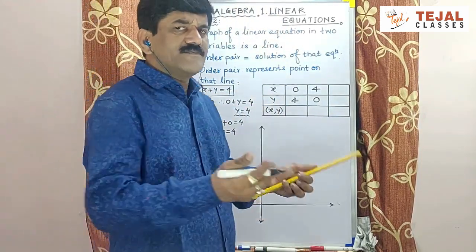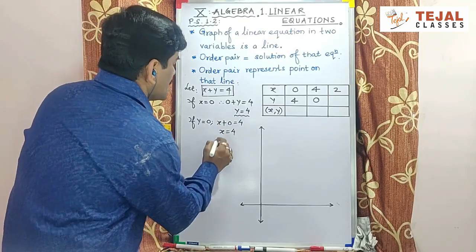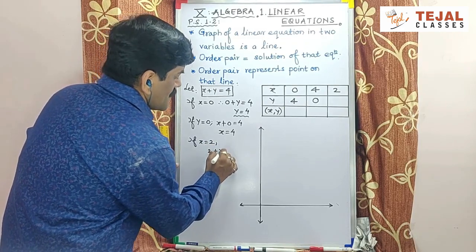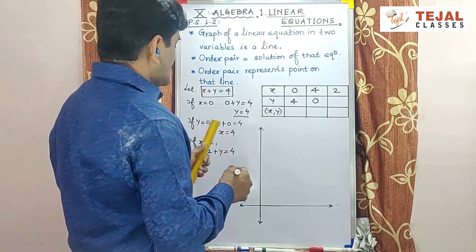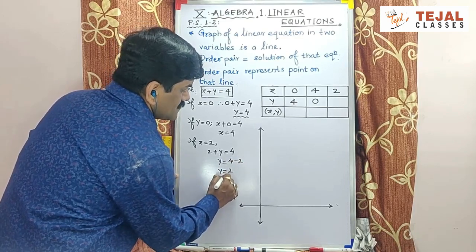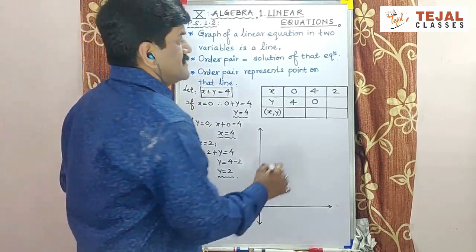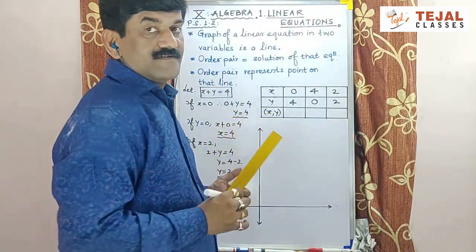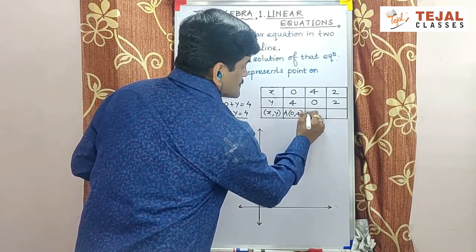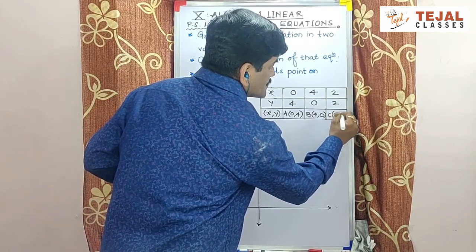Third, अब मैं कोई भी एक point ले सकता हूँ. For example, my third point: x की value रहेगी 2. तो if x का value 2 है, then 2 plus y equal to 4, तो y का value = 4 minus 2 = 2. So the three ordered pairs are: first (0,4), second (4,0), and third (2,2).